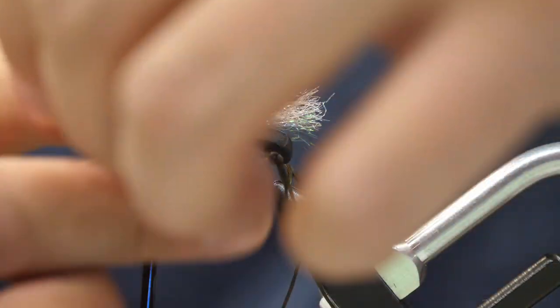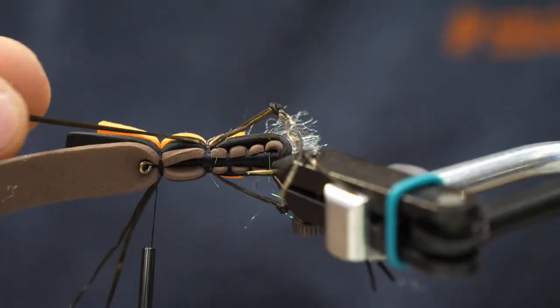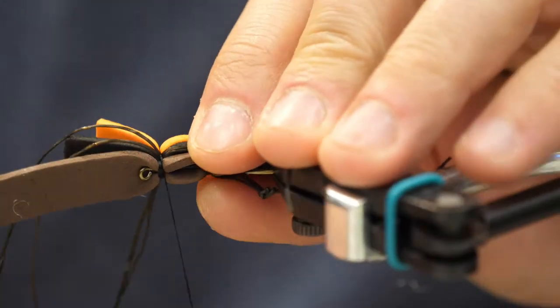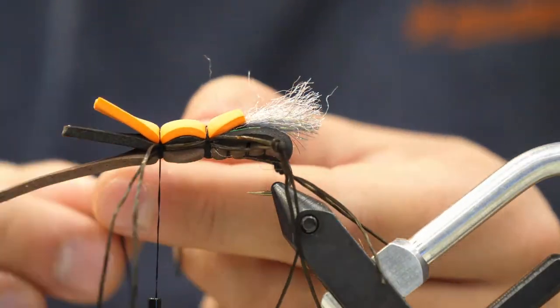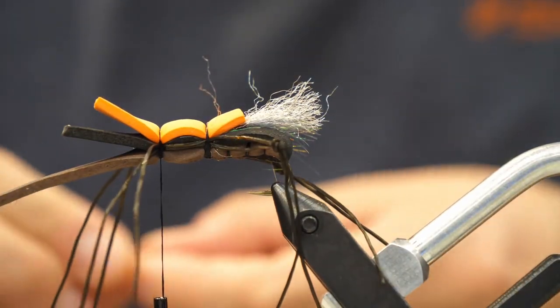Okay, now we're going to pull the rubber legs forward along the exact side of the body, and I'm just going to lock those down with very delicate wraps here at first. I'm going to do both sides. I like to turn the vise sideways. That way I can just have gravity assist me in keeping those exactly where I want them.